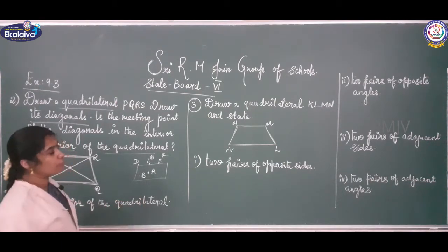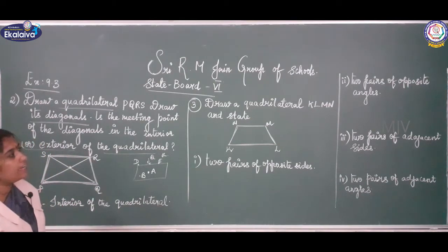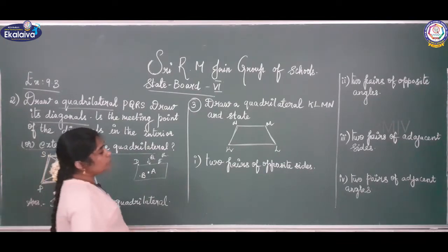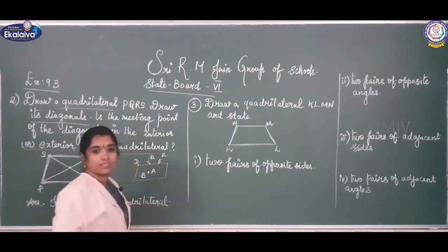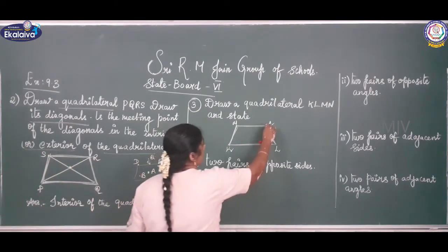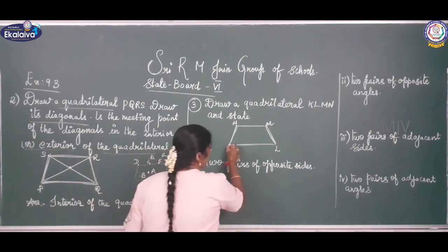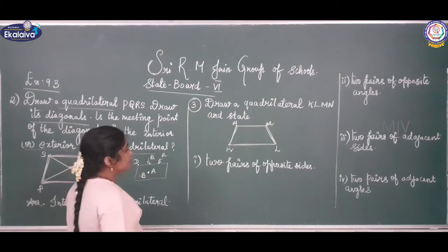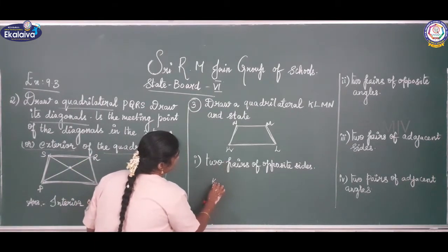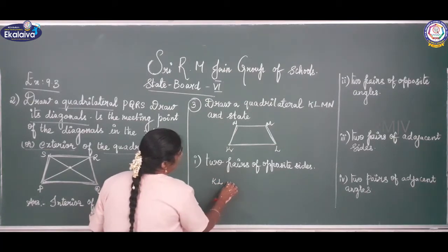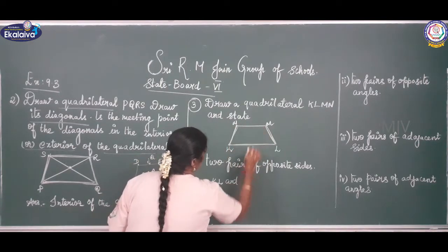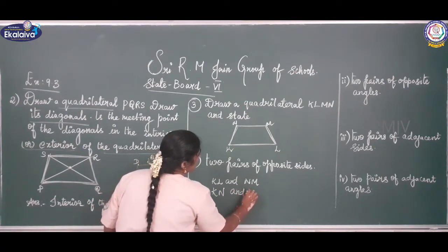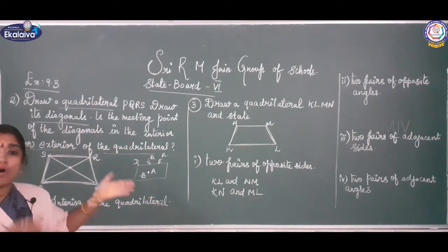I have drawn the quadrilateral and marked K, L, M, N. The first question asks for 2 pairs of opposite sides. The sides are KN, MN, KL, and NM. So the 2 pairs of opposite sides are: KL and NM, and KN and ML.